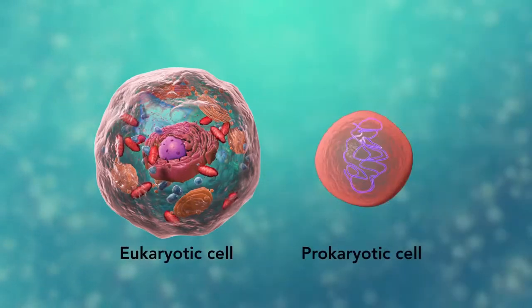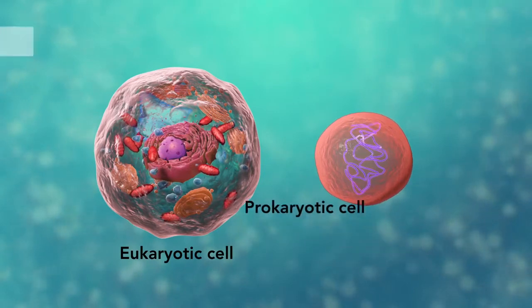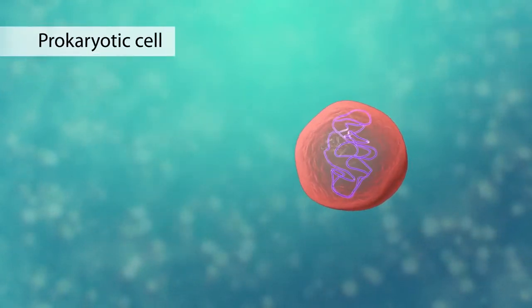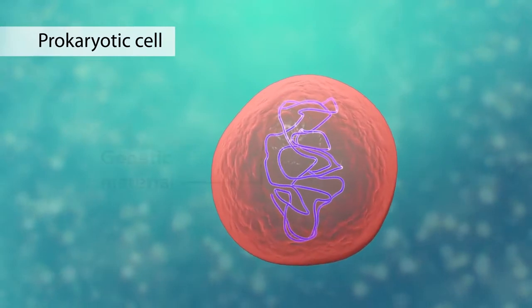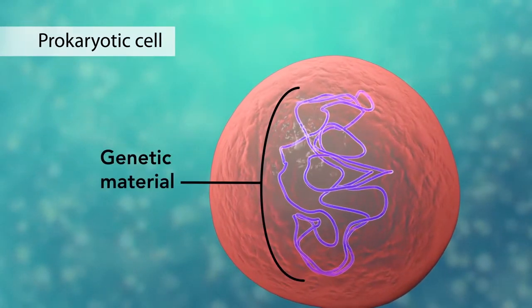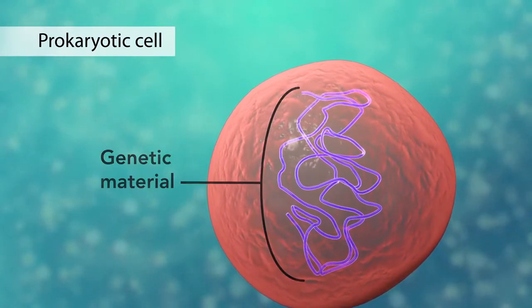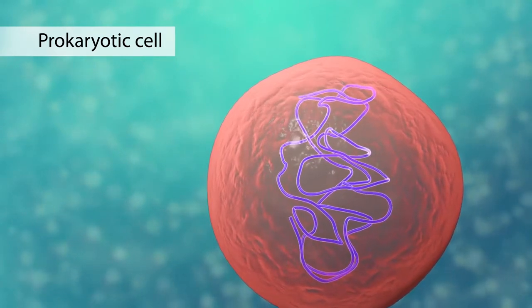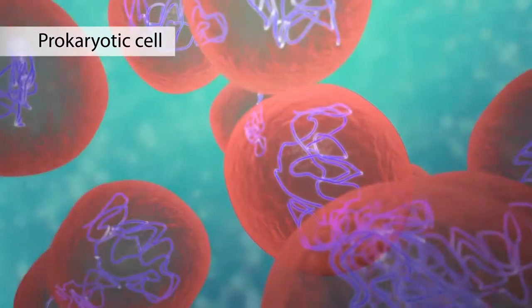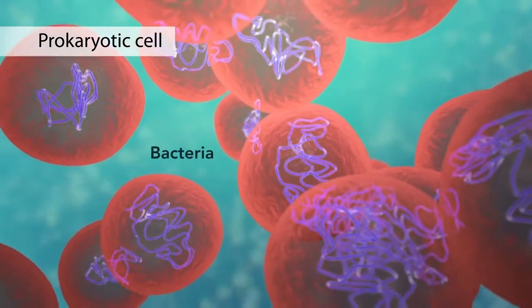The second category is prokaryotic cells. They don't have a nucleus or membrane-enclosed organelles. They do have genetic material but it's not contained within a nucleus. Prokaryotic cells are always one-celled or unicellular organisms such as bacteria.